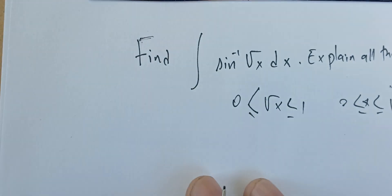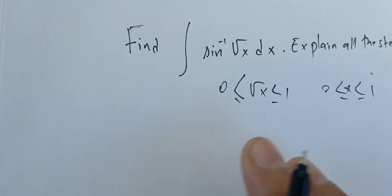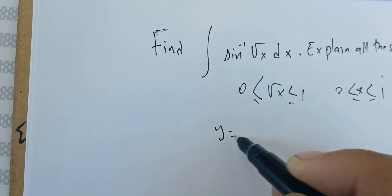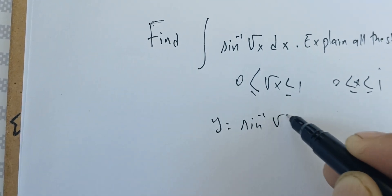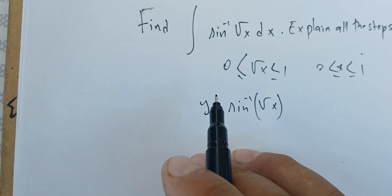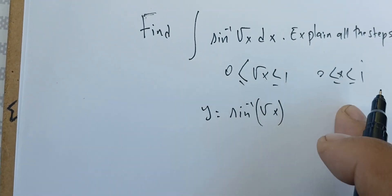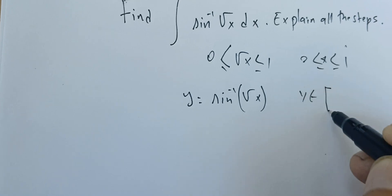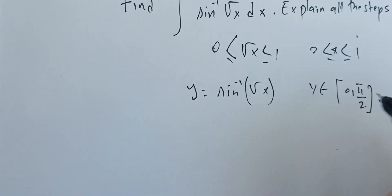We're going to use a change of variable to get rid of the sine inverse and the square root together. The best option is to let y = sin⁻¹(√x). When x is between 0 and 1, y is going to be between 0 and π/2, so we have no problem here.